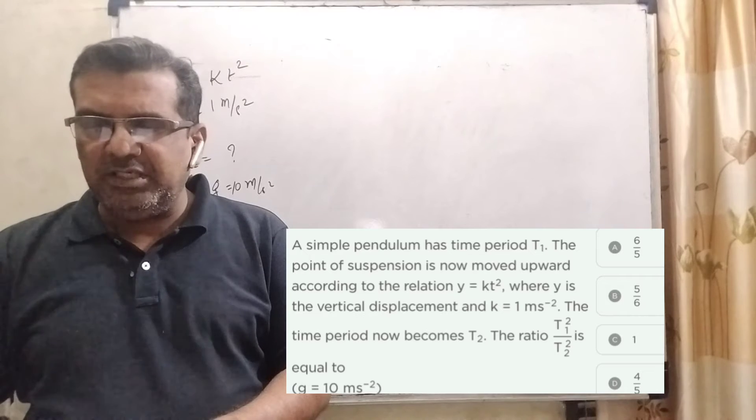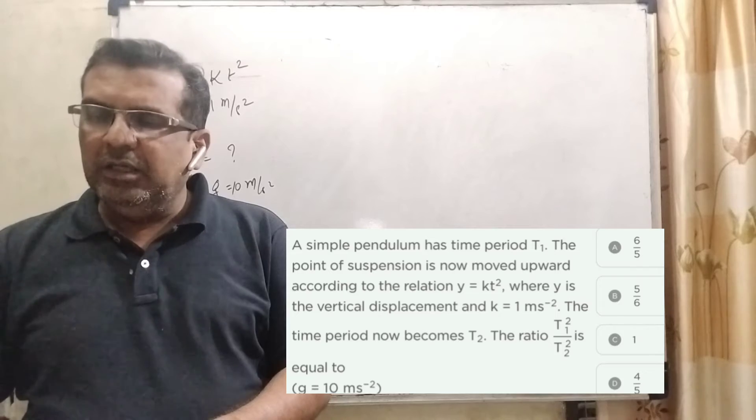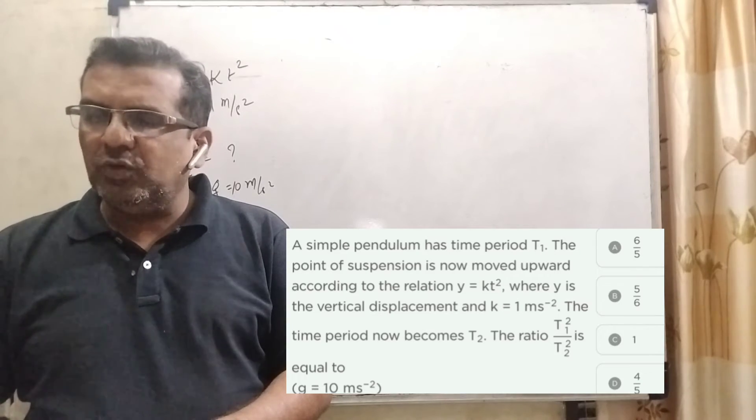Option A, 5 by 6. Option B, 6 by 5. Option C, 1. And option D, 4 by 5. This question is asked IIT 2005.